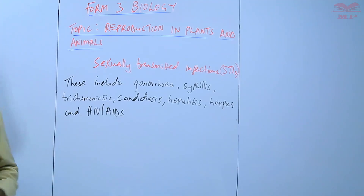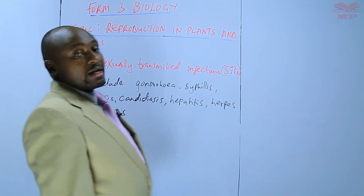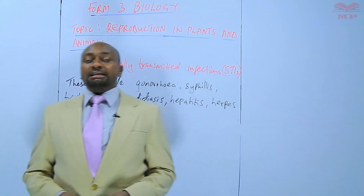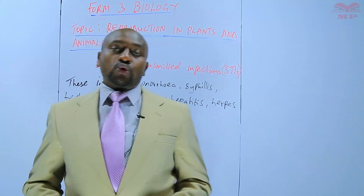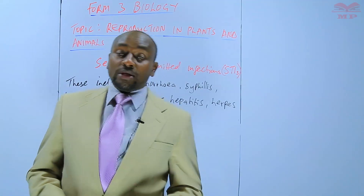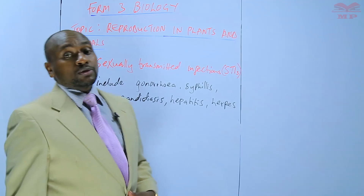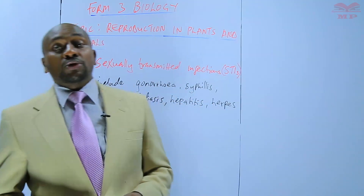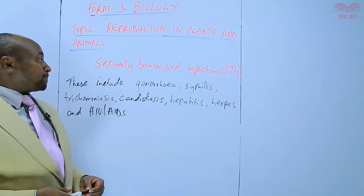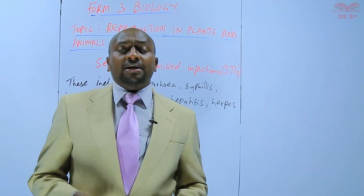So basically those are the sexually transmitted infections that we are going to discuss. We are mainly interested in what causes the disease — the causative agent — whether it's a bacterium, a virus, a protozoan, or a fungus. All those are examples of disease-causing microorganisms. We are also interested in the mode of transmission and we will also go through control and treatment — how we can be able to control these particular diseases.